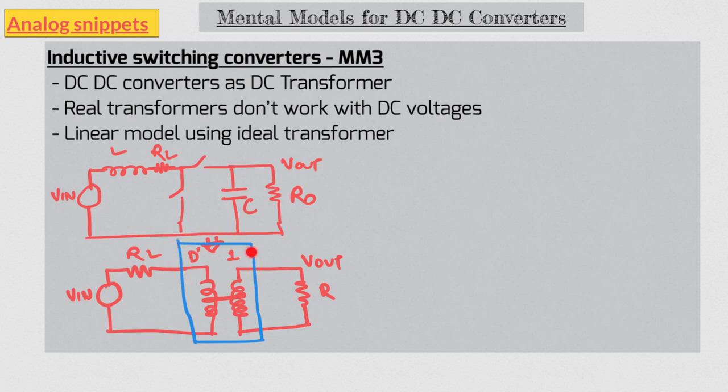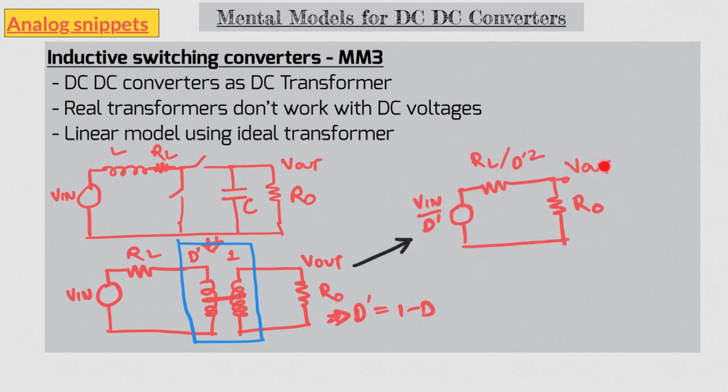The turns ratio is d dash over 1. Where d dash is just 1 minus d. Now using the impedance transformation property of a transformer, we can push the RL and V in towards the output side. So now it becomes simple resistor divider circuit and we can solve it for Vout.